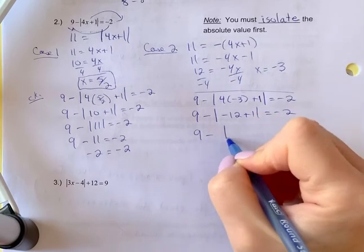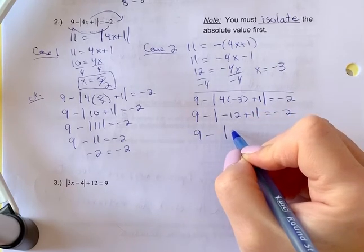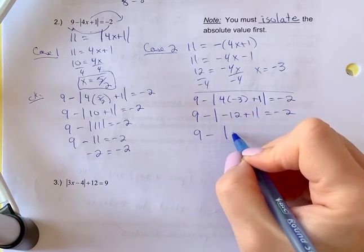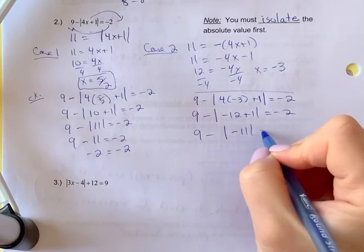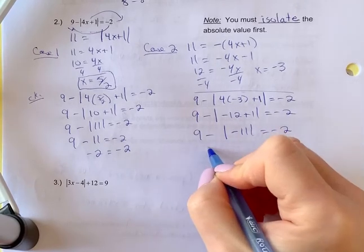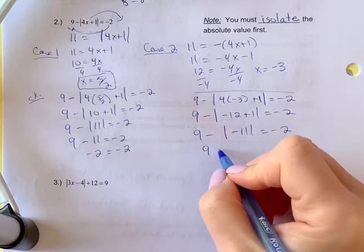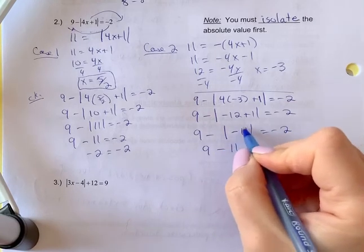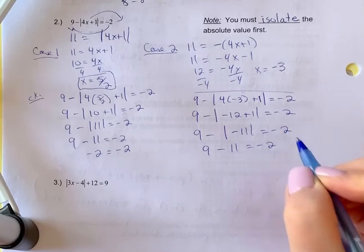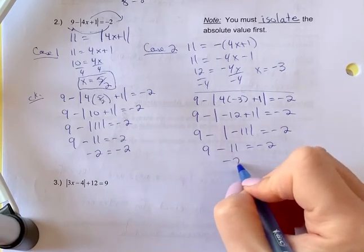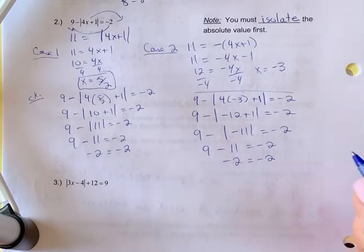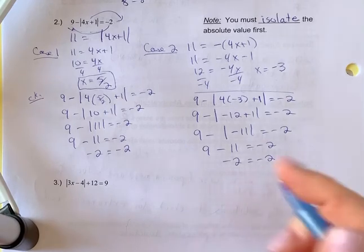Nine minus your absolute value here, so negative twelve plus one is negative eleven. Nine minus eleven. So this changes to positive now when you take that out. So you get negative two equals negative two, which means this is a true statement.